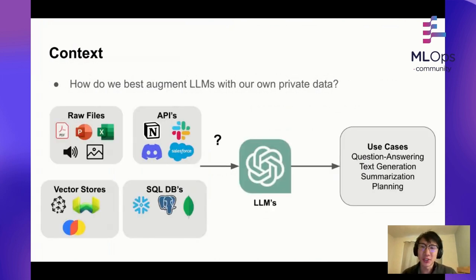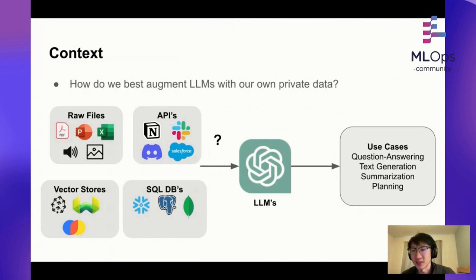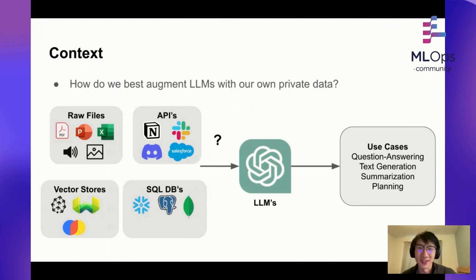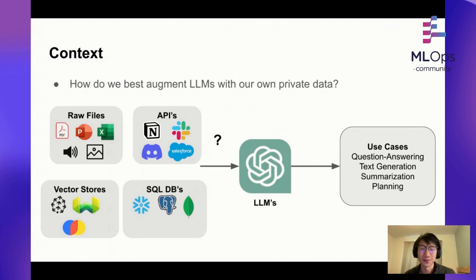Pretty much every application developer using LLMs thinks to themselves: how do we best augment language models with our own private sources of data? Whether you're an individual or an enterprise, you're going to have a bunch of raw files lying around — like PDFs, PowerPoints, Excel sheets, pictures, audio. You might use workplace apps like Notion, Slack, Salesforce. Or if you're an enterprise, heterogeneous sources of data from data lakes, structured data, vector DBs, object stores, and more. The key question is how do we best augment LLMs with all this data?